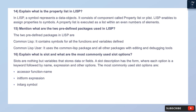Question 16: Explain what a slot is and what are the most commonly used slot options. Slots are nothing but variables that store data or fields. A slot description has a form where each option is a keyword followed by a name, expression, and other options. The most commonly used slot options are: accessor function name, init-form expression, and init-arg symbol.